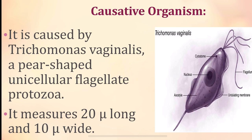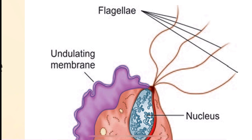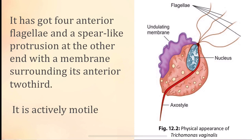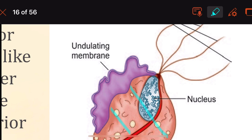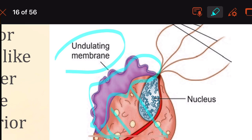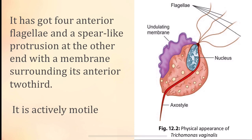The organism has four anterior flagella. There is a spear-like protrusion at the other end called the axostyle, and an undulating membrane in the anterior two-thirds. Because it contains flagella, it is actively motile.